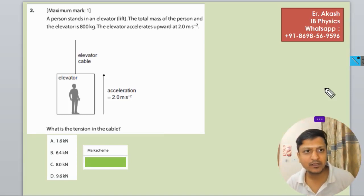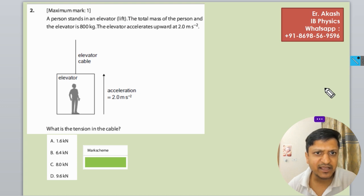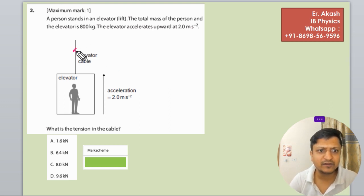So champions, how are you? The question says a person stands in an elevator. The total mass of the person and elevator is 800 kg. The elevator accelerates upwards at 2 meters per second squared. What is the tension in the cable? So the tension in the cable we have to find. Acceleration is given, so first of all we will make a free body diagram.